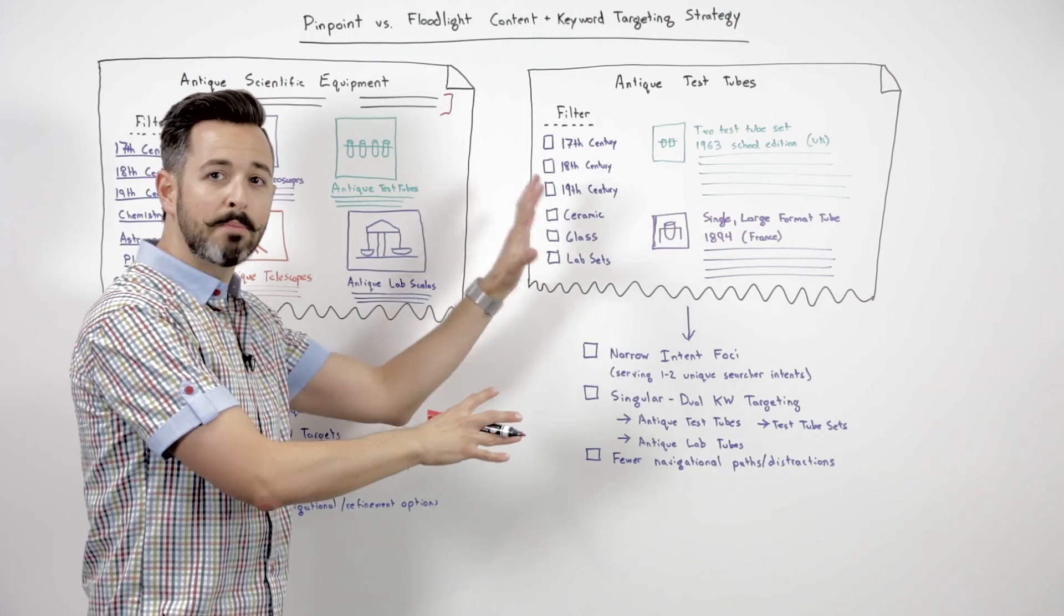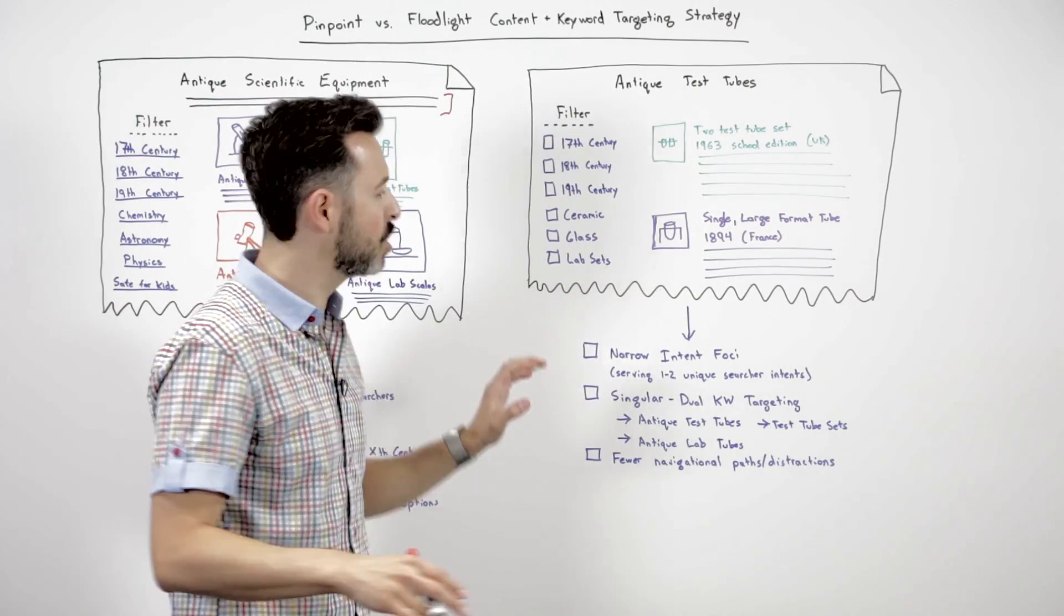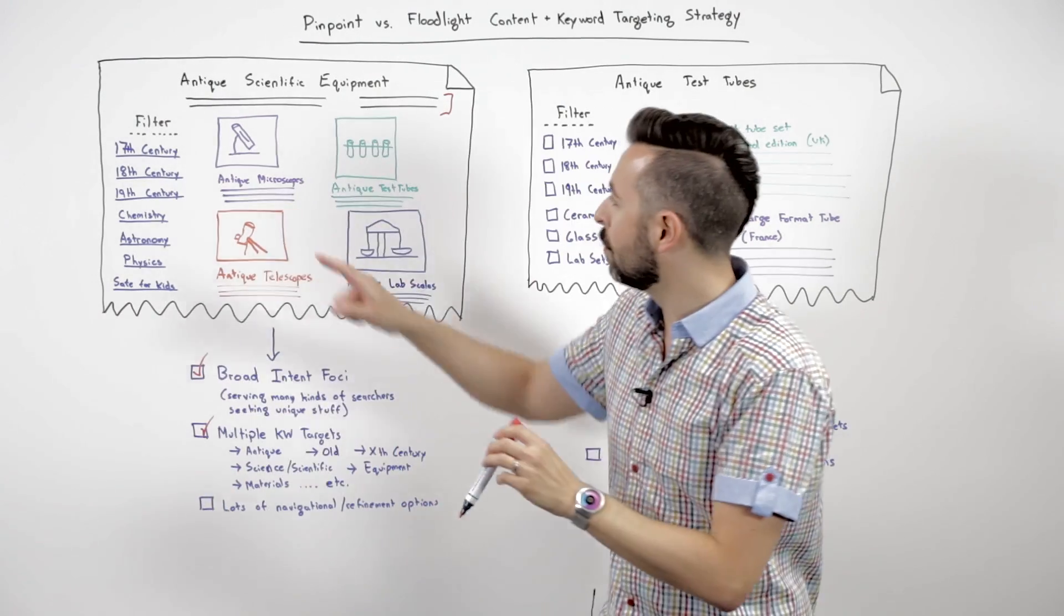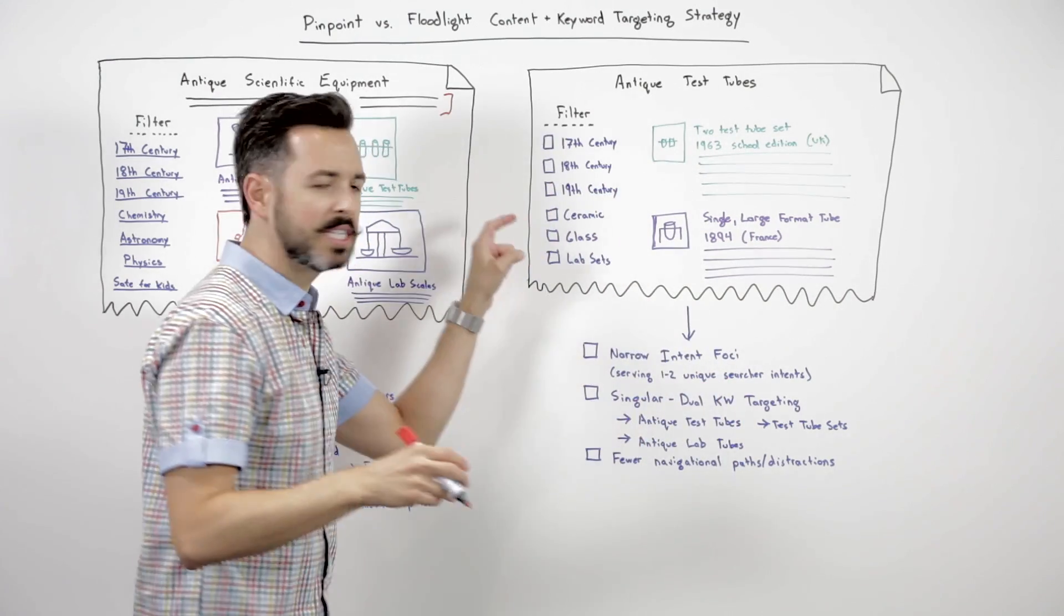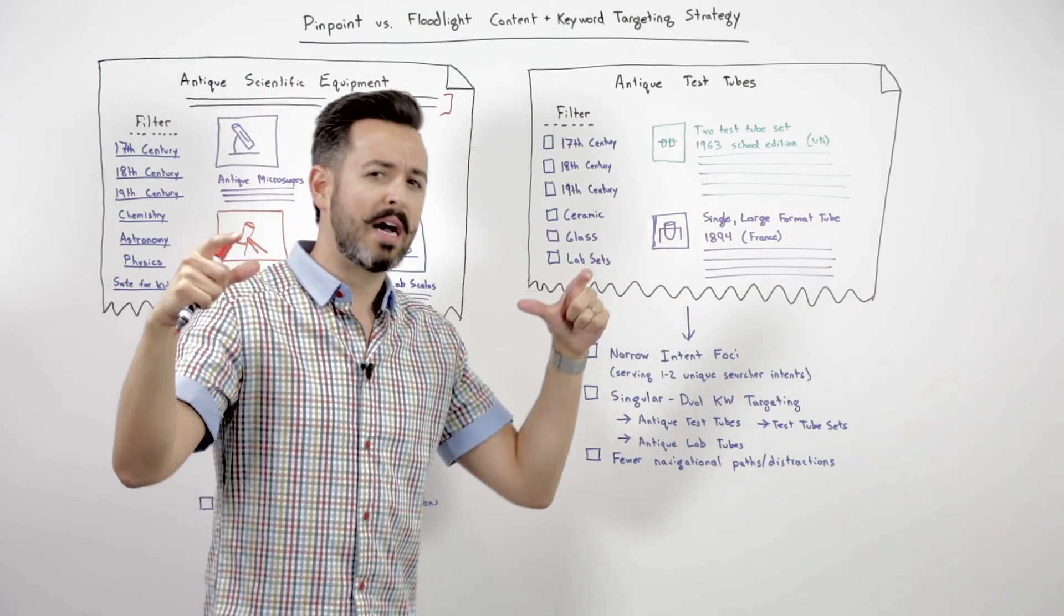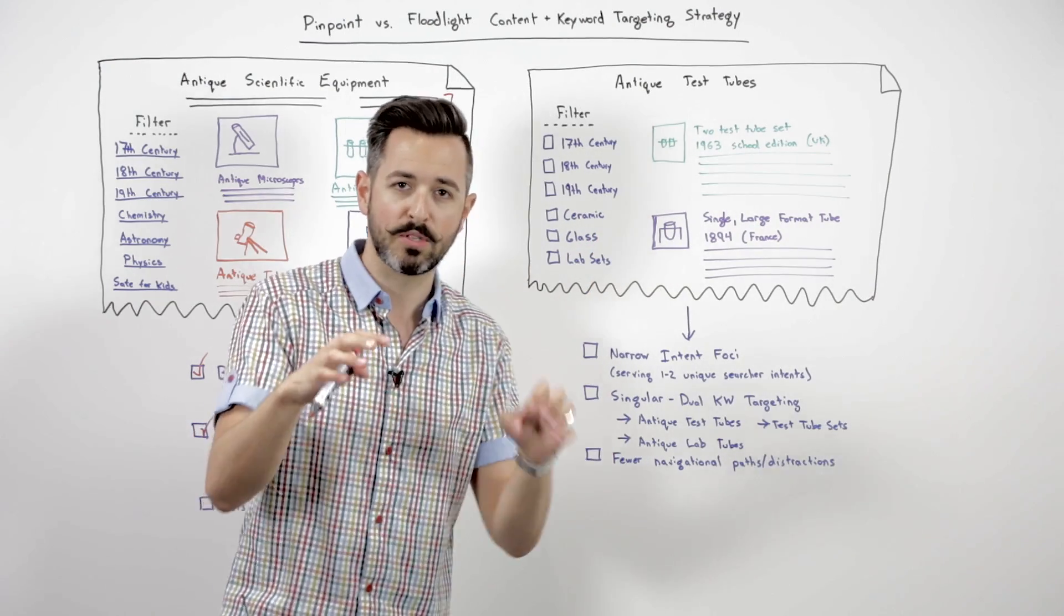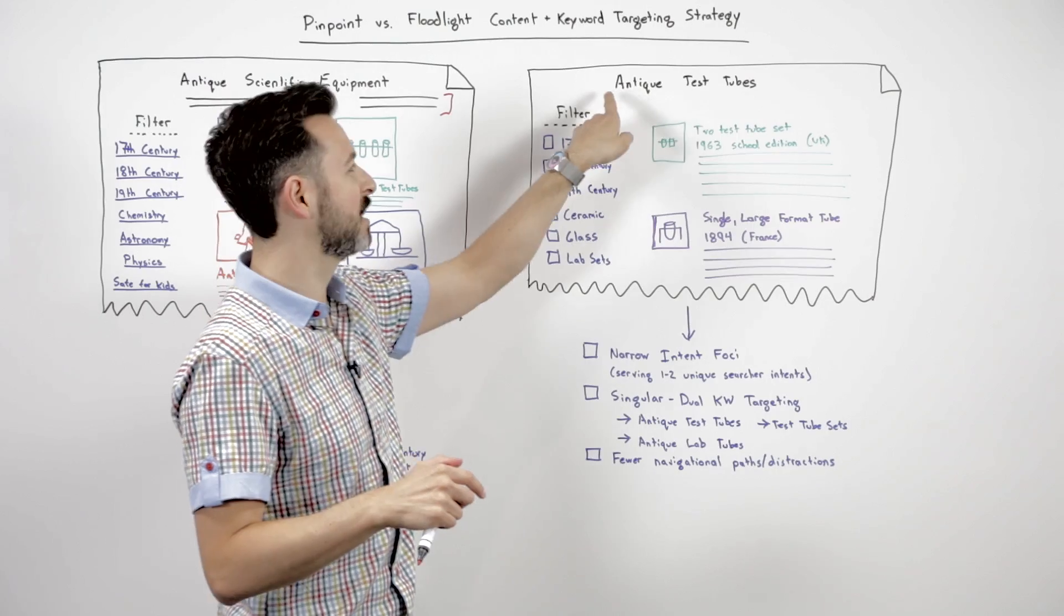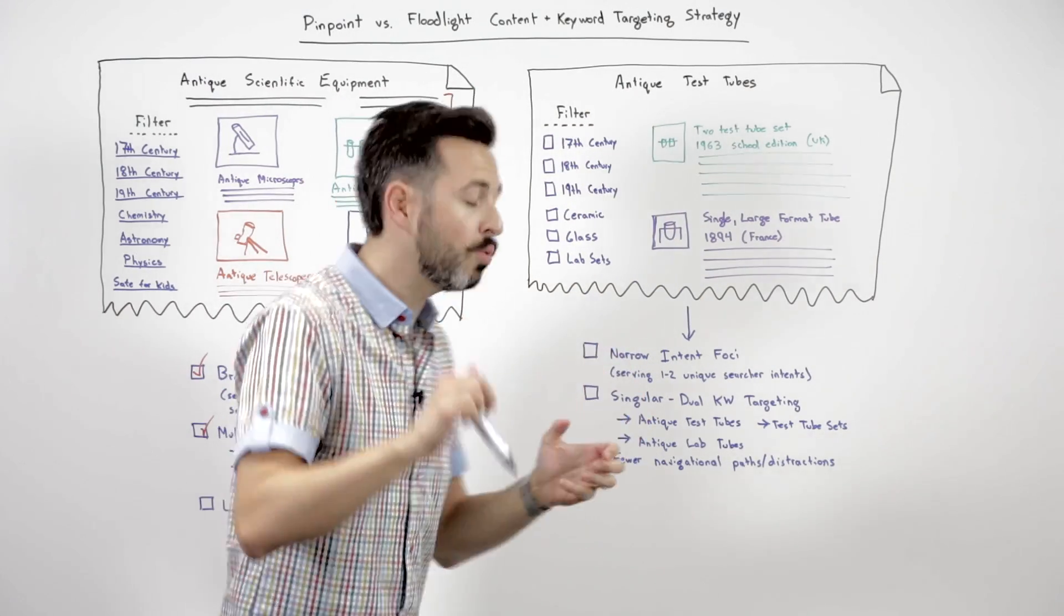Total opposite of pinpoint content. Pinpoint content like this antique test tubes page. We're still going to have some filtration options, but one of the important things to note is how these are links that take you deeper. Depending on how deep the search volume goes in terms of the types of queries that people are performing, you might want to make a specific page for 17th century antique test tubes. You might not.